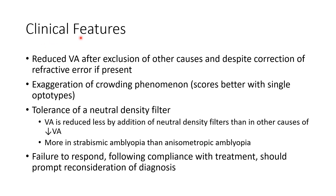Now let us discuss the clinical features of amblyopia. There is reduced visual acuity after exclusion of other causes and despite correction of refractive error if present. There is exaggeration of the crowding phenomenon, meaning the patient scores better with single optotypes. There is also tolerance of a neutral density filter — visual acuity is reduced less by addition of neutral density filters than in other causes of reduced visual acuity. This tolerance is more prominent in strabismic amblyopia than in anisometropic amblyopia.